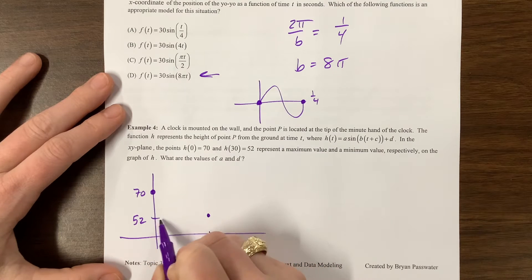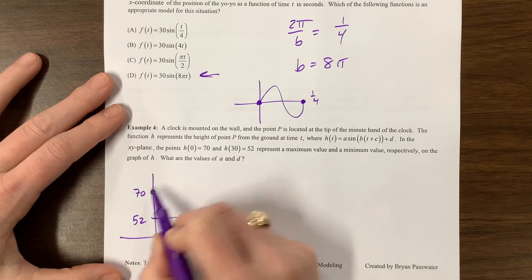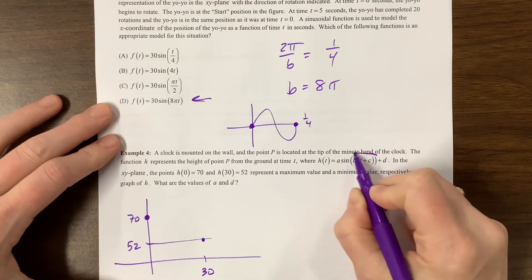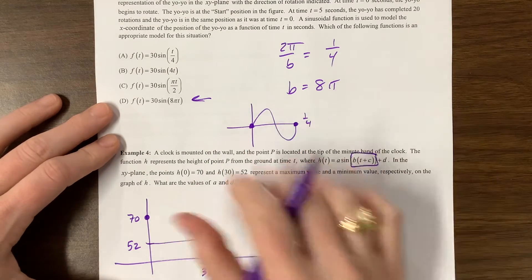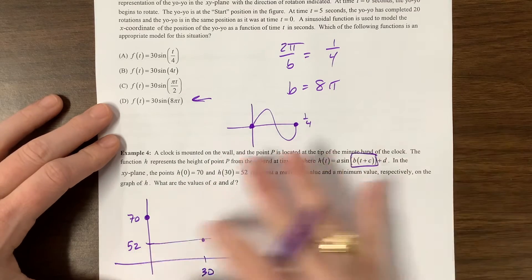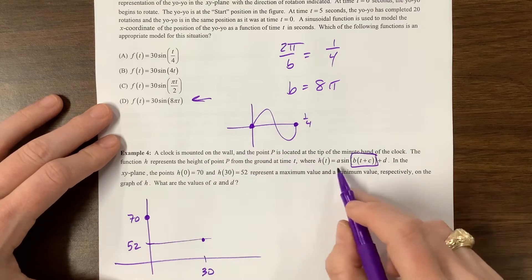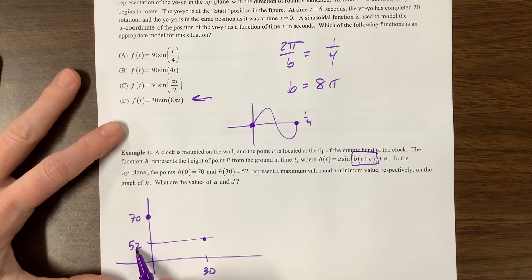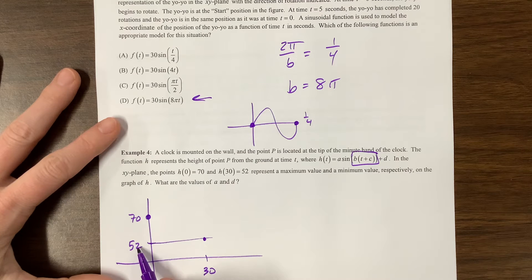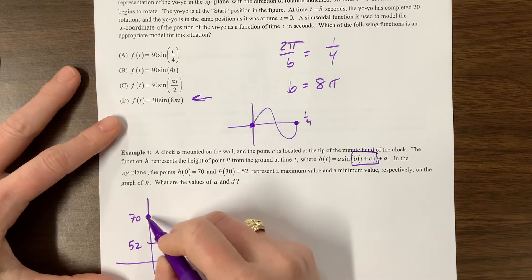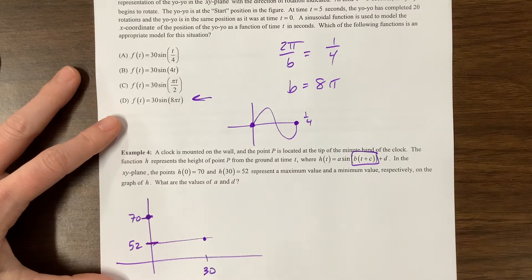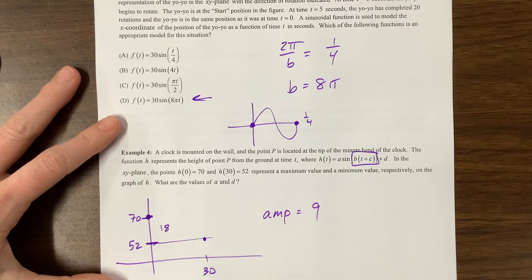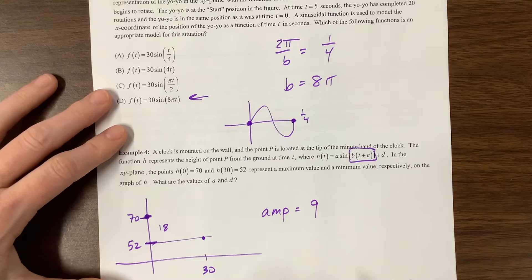If this is the max and this is the min, B and C will affect the period. B affects the size of the period. C affects where the period starts and stops. But A and D have nothing to do with that. A is going to be what the amplitude is. The total distance from the very top to the very bottom is 18. And so, that means that my amplitude is 9. It's half of that.